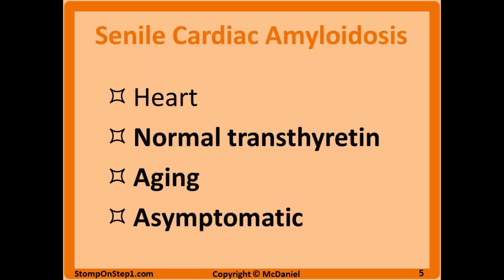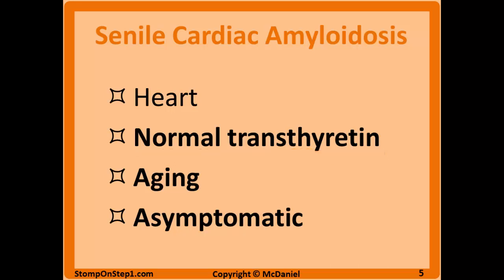Senile cardiac amyloidosis is a type of amyloidosis isolated to the heart, caused by an aggregation of normal transthyretin. Unlike the familial type, this is just normal transthyretin — there's no mutation. This is not as big of an issue as the other types of amyloidosis because it's generally just a normal sign of aging and is asymptomatic, so it's really just an incidental finding.